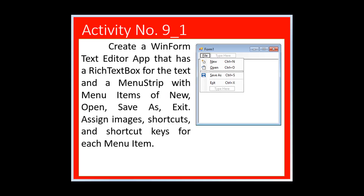In our first activity, we will create a WinForm Text Editor app that has a rich text box for the text and a menu strip with menu items of New, Open, Save As, and Exit. We will assign images, shortcuts, and shortcut keys for each menu item.